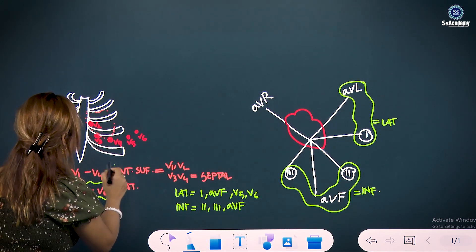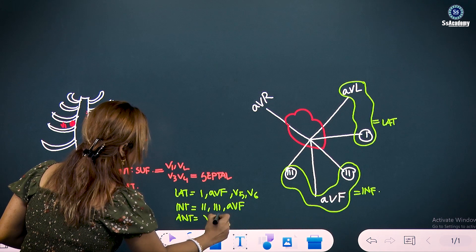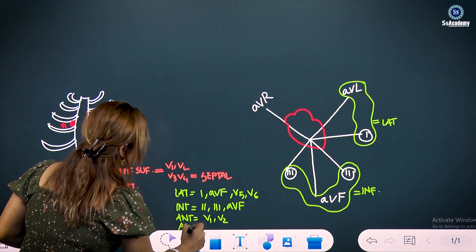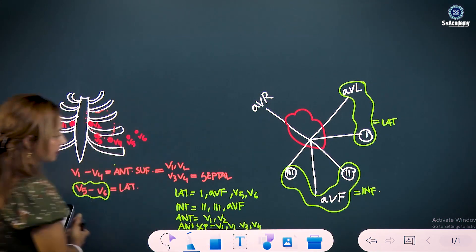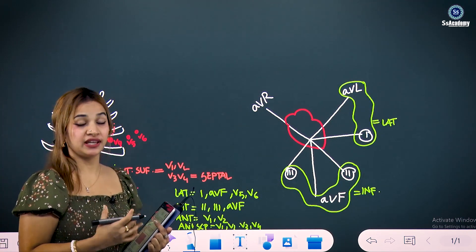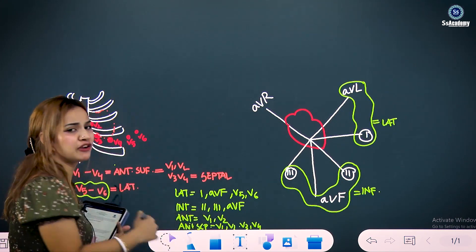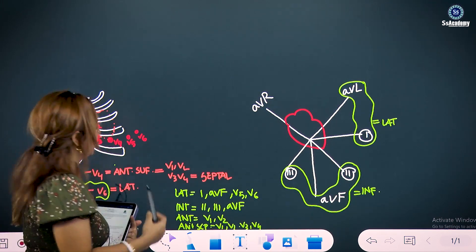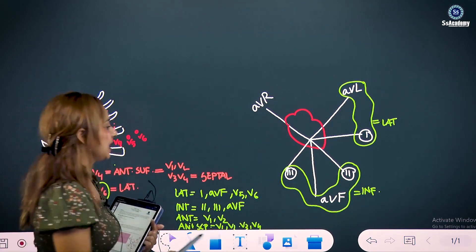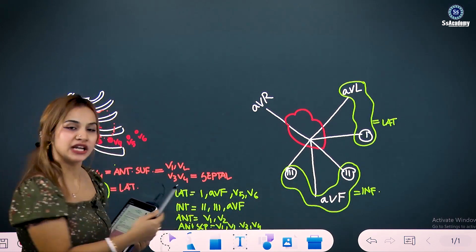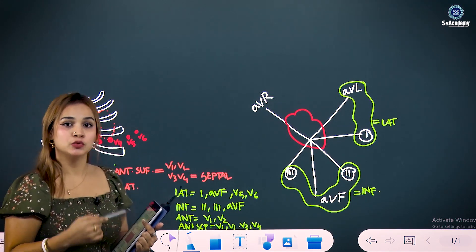To summarize: Lateral = I, AVL, V5, V6. Inferior = II, III, AVF. Anterior = V1, V2. Anterior-septal = V1, V2, V3, V4. So if a person has anterior MI, look for abnormalities in V1 and V2. Anterior septal MI shows ST elevation in V1–V4. Inferior MI shows abnormalities in leads II, III, and AVF.